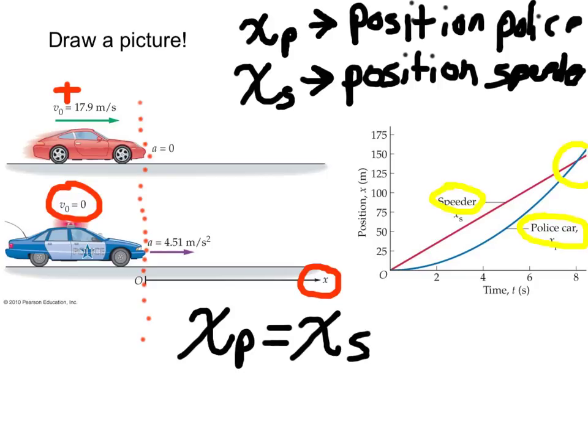Alright, and now we will take those two equations and solve for t. Once you find the time it takes for the police car to catch the speeder, it's very easy to calculate the distance traveled and the velocity of the police car.